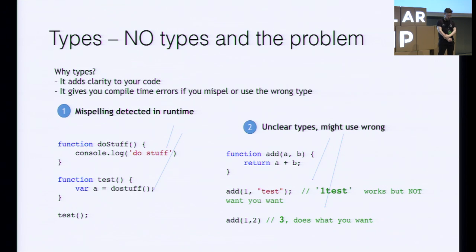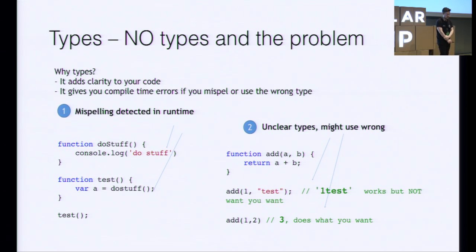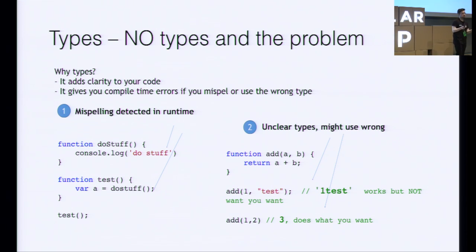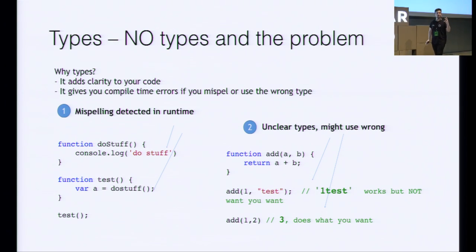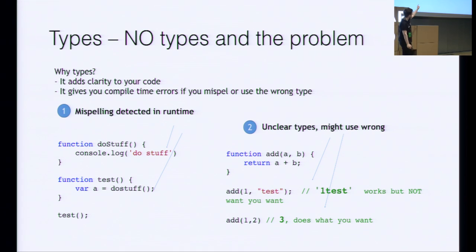For example, on the number two here on the right, TypeScript will ensure that you don't mess this up. If you use the add method with one and a string, we are mixing types and get a result that's not what we expect. But when we use two numbers, we get what we want. TypeScript can fix that scenario for us — this is really the point: being more clear about your intentions.